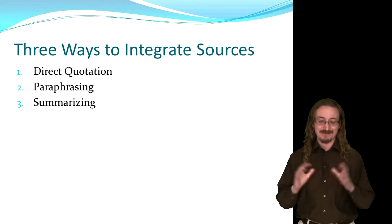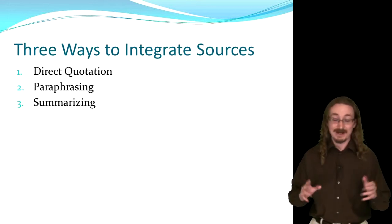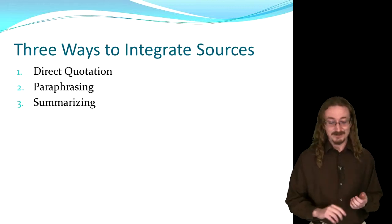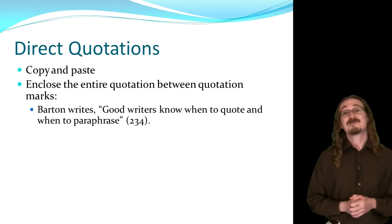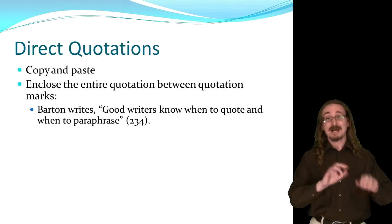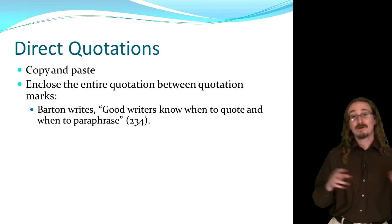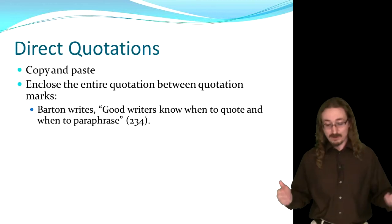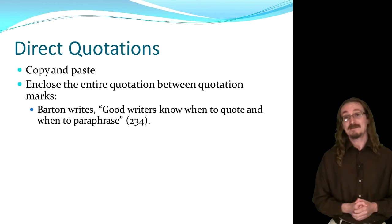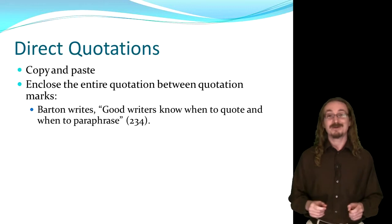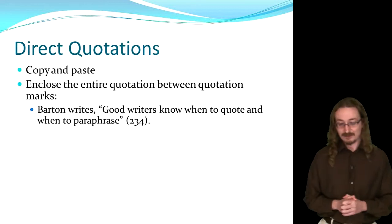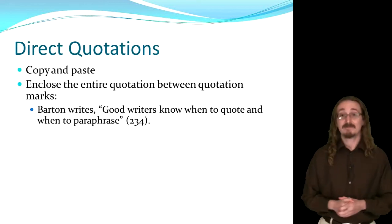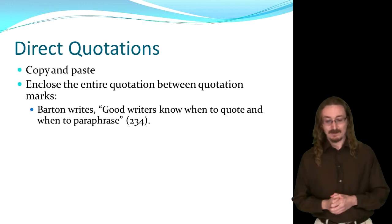Okay, so now that that's clear, there are three ways to integrate sources into your writing. One is the direct quotation. The second one is the paraphrase, and then we'll talk about summarizing. Direct quotations are basically copy and paste from the source — you type it in word for word, and they're always placed between quotation marks. For example: 'Barton writes, "good writers know when to quote and when to paraphrase" (234).' That's the page number where I got the quotation. Note that there's no period inside the quotation marks — that goes after the parentheses.